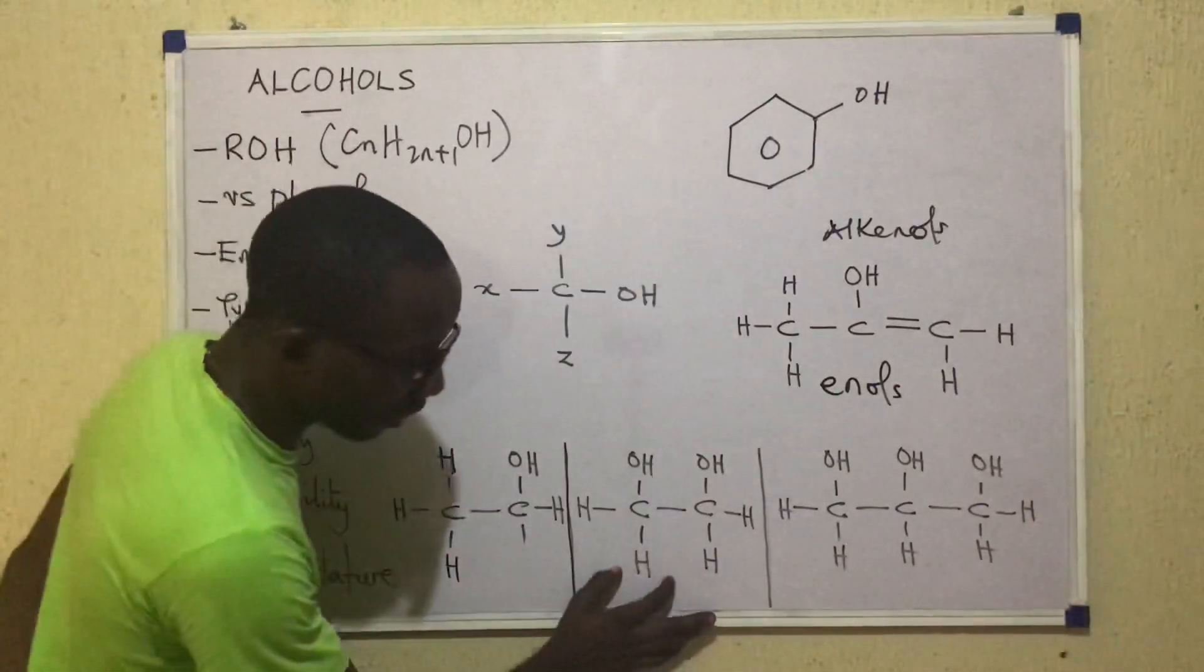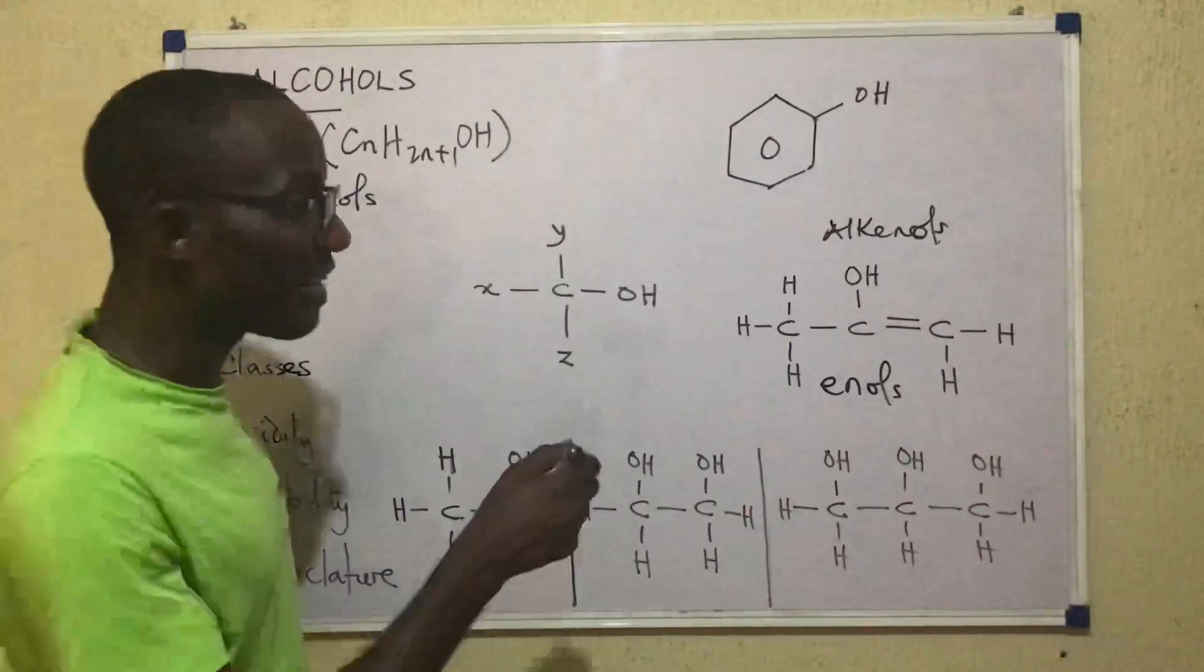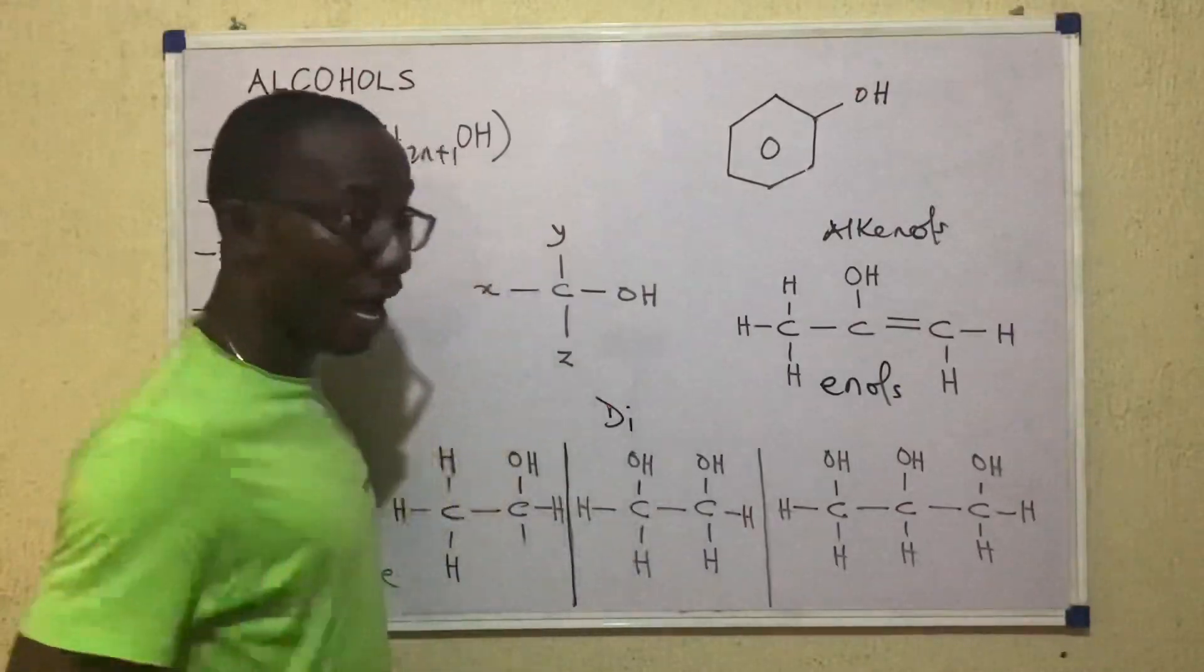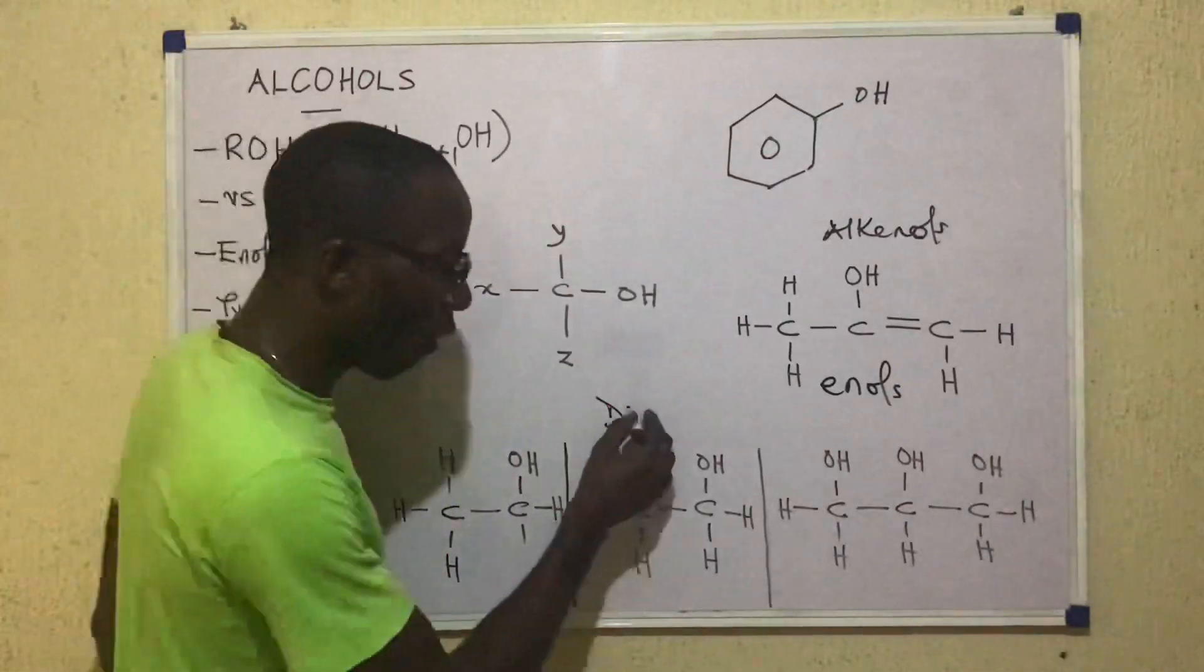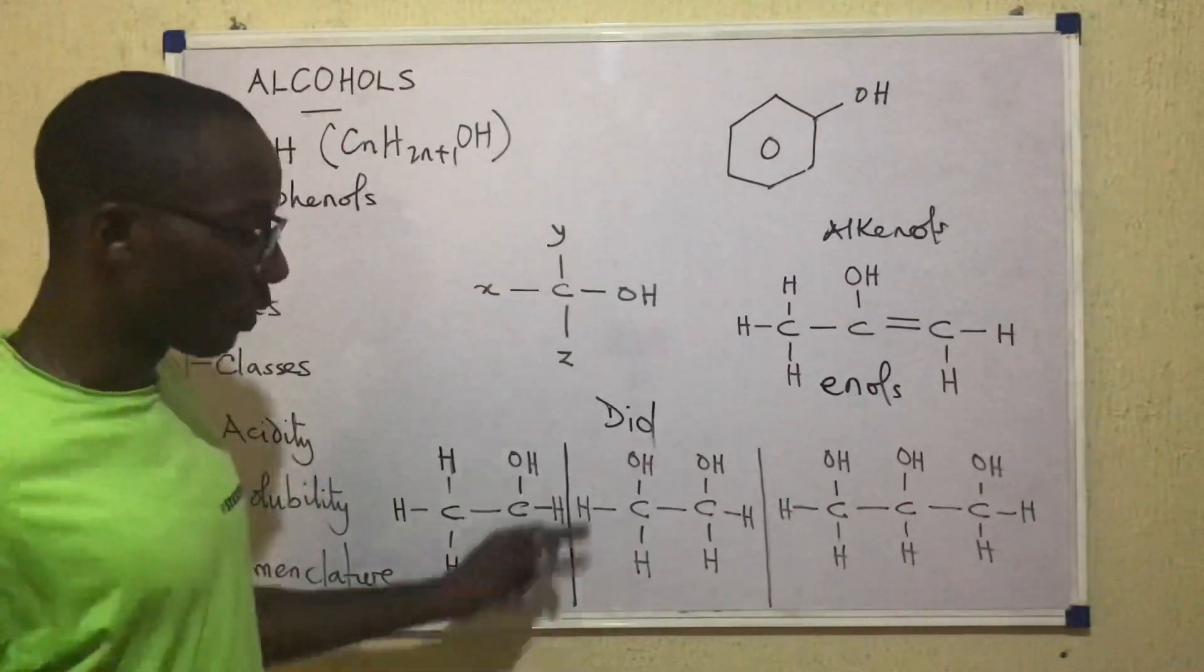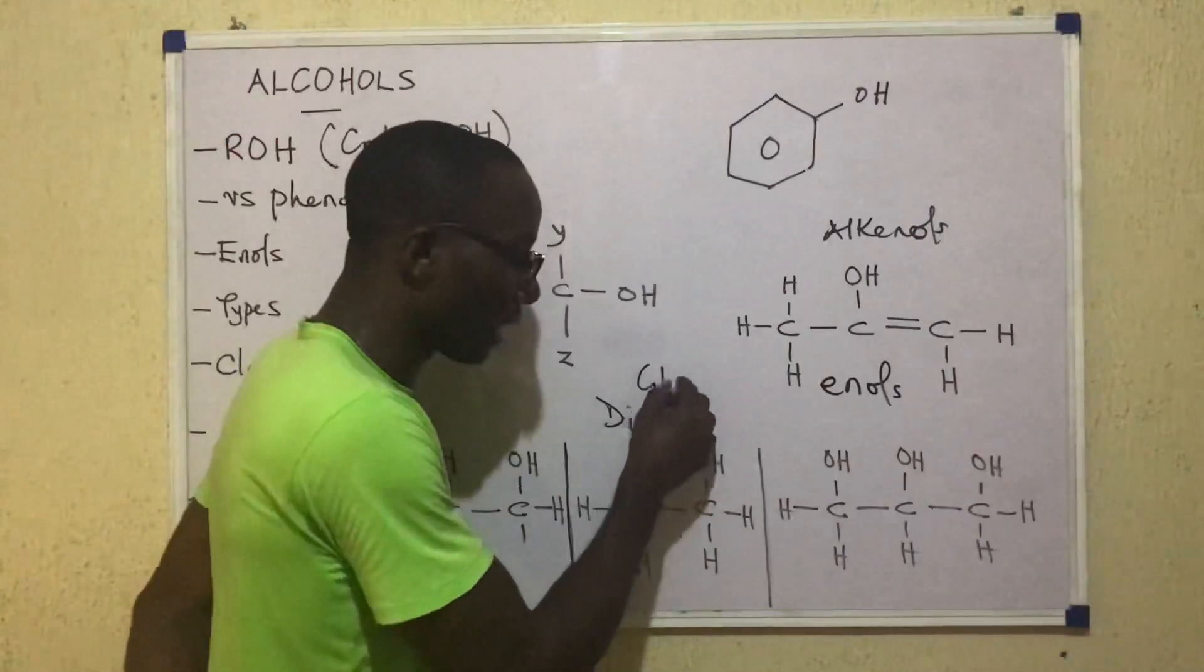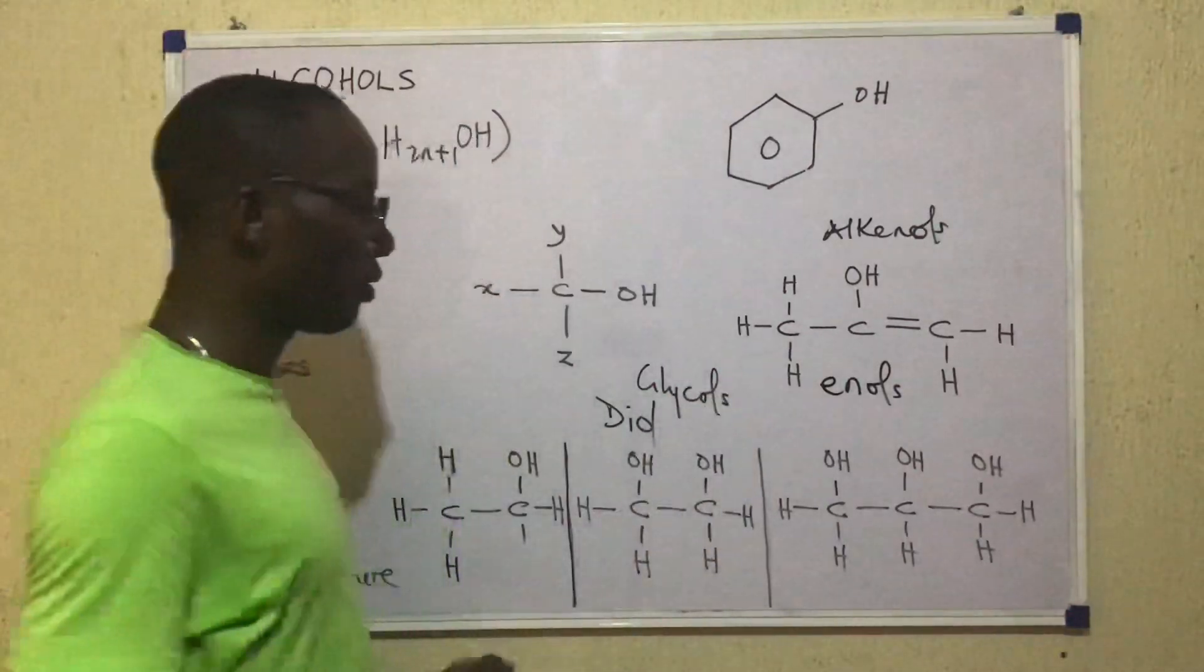But in this other case, we have two OH groups present. So we say this alcohol is a dihydric alcohol. Such compounds are called diols. So a diol is a dihydric alcohol and they are also called glycols. So the glycols are the diols.